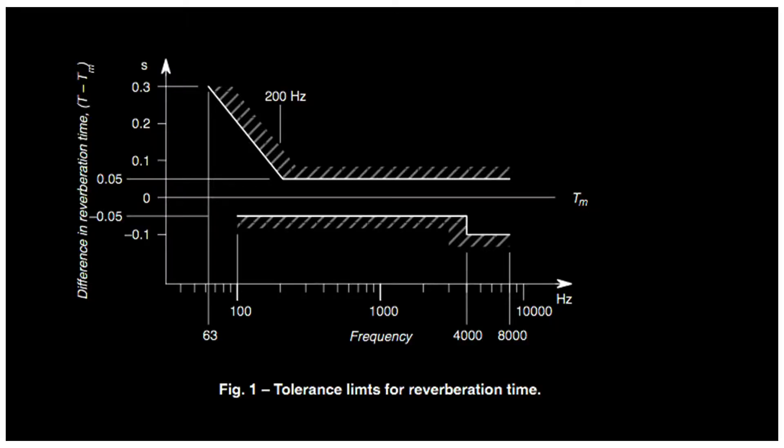That leads us to resonant absorbers, which a lot of people get into when they're starting to treat their room because they know they have problems in the sub range — 50 hertz and below. So they think they need to treat it, which is false. According to the European Broadcasting Union, for critical listening rooms, you don't need to worry about the decay of 50 hertz and below as much as you do from 50 hertz up to your shorter frequency or beyond. Beyond that, everything's easier to treat, but your bass range is really where everyone has trouble.